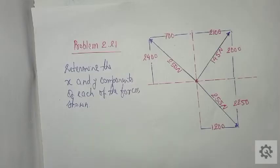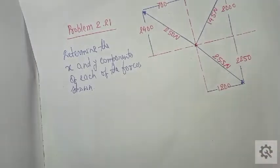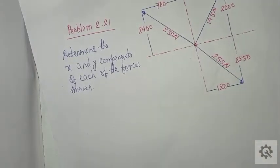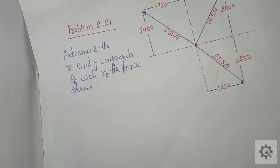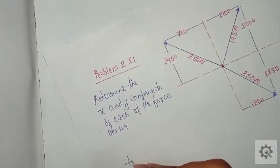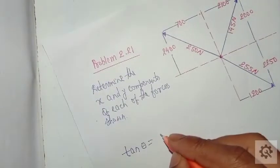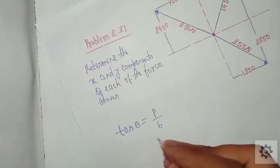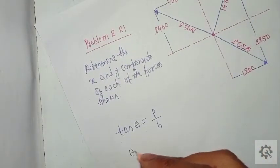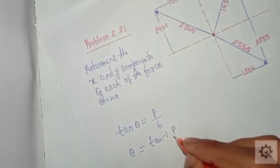Here you can see no angles are given, but you can apply the basic trigonometry that you know: perpendicular upon base is tan theta. So tan theta equals perpendicular upon base, and from here we can find theta equals tan inverse of perpendicular upon base.